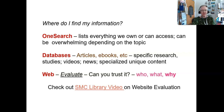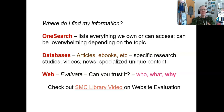The first place you want to start is OneSearch, which is the search field you see when you go to the library homepage. It looks a little like a Google search box, but it's not like Google because it only searches the things we own or can access. It can be a little overwhelming depending on the topic you're searching, so you'll want to limit it.